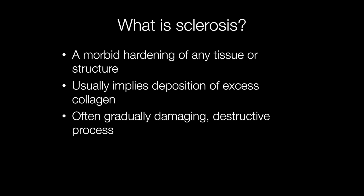Sclerosis may be harmless — for example, if a benign tumour has a sclerotic stroma — but in many cases sclerosis has a rather more sinister implication, where there is gradual damaging and destruction of the affected tissues. The best way to describe sclerosis is to look at a number of examples.